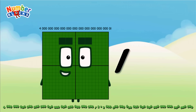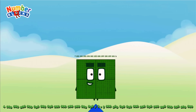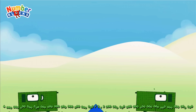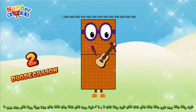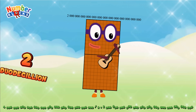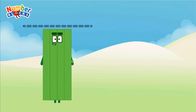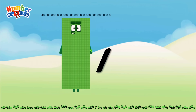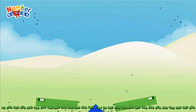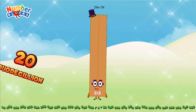Four duodecillion divided by two equals two duodecillion. Forty duodecillion divided by two equals twenty duodecillion.